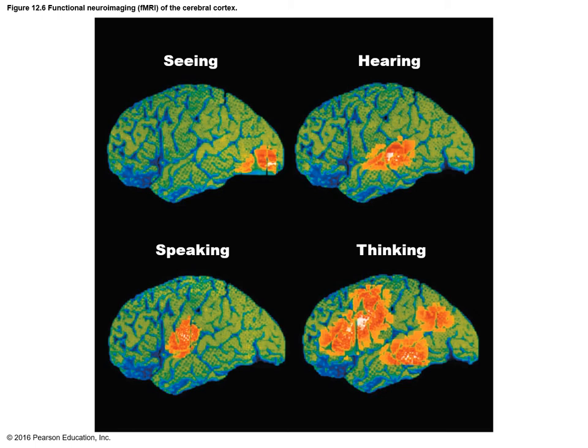There is still much we don't know about how the brain works. Over the past 25 to 30 years, researchers have realized that studies focused only on males are insufficient. Good research must include both males and females and different age groups, since the brain is still developing across the lifespan. We are constantly learning more, but there is still a great deal yet to understand.